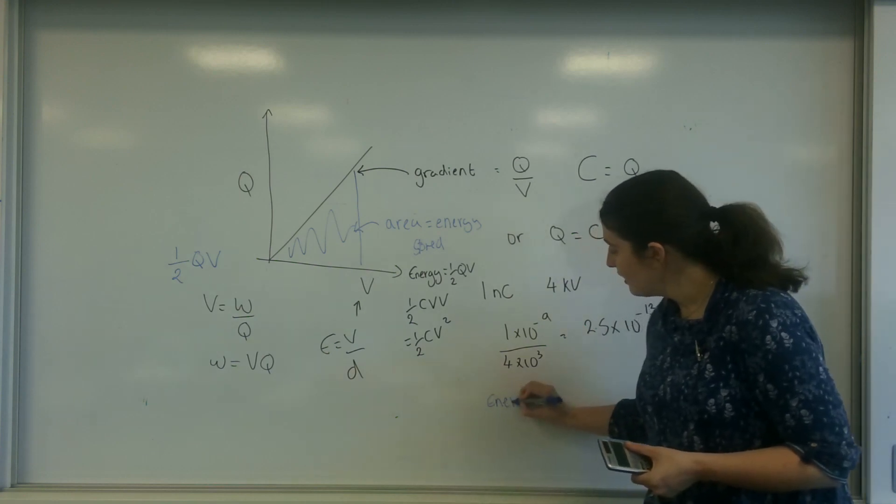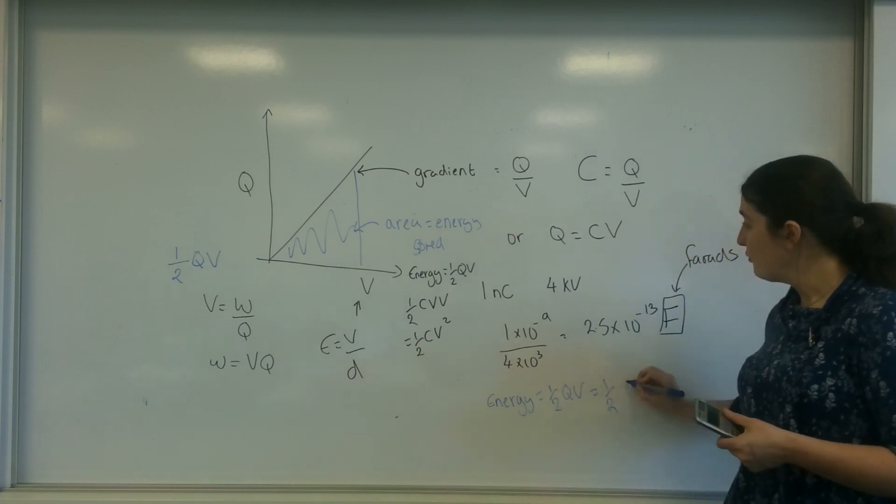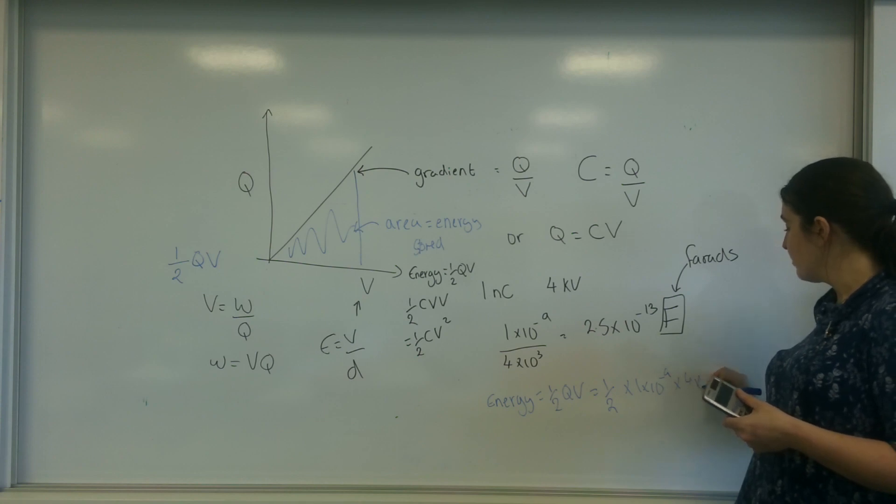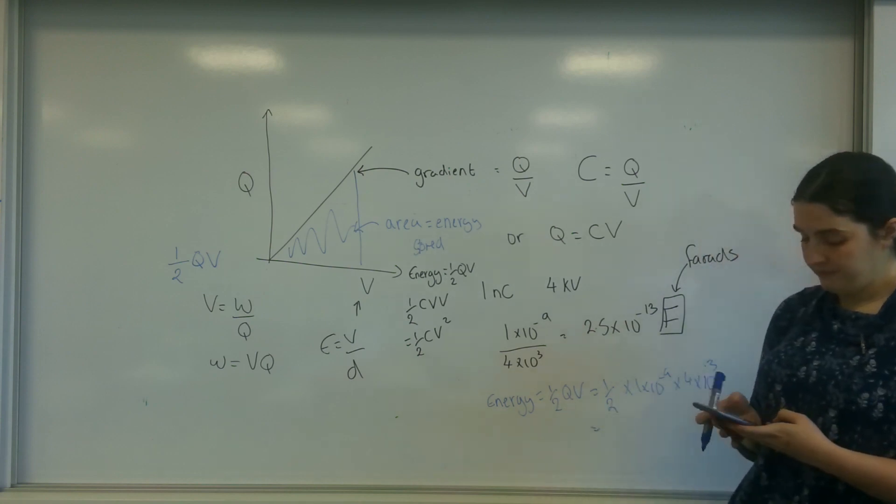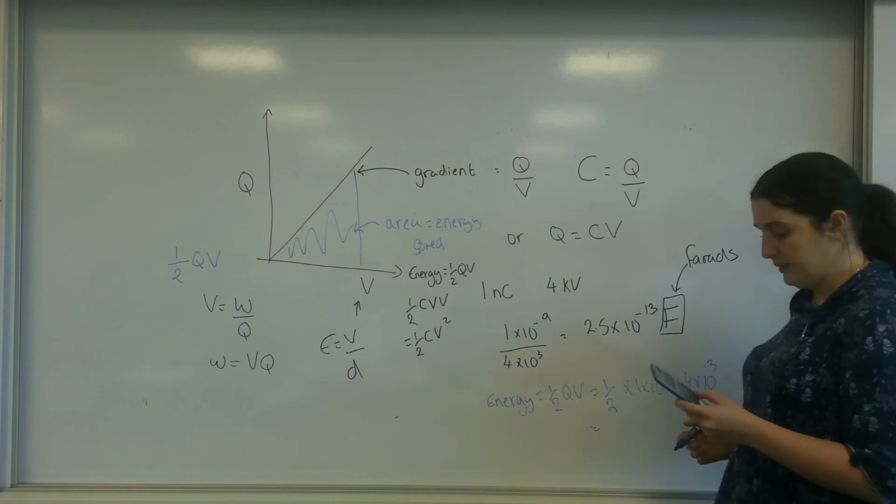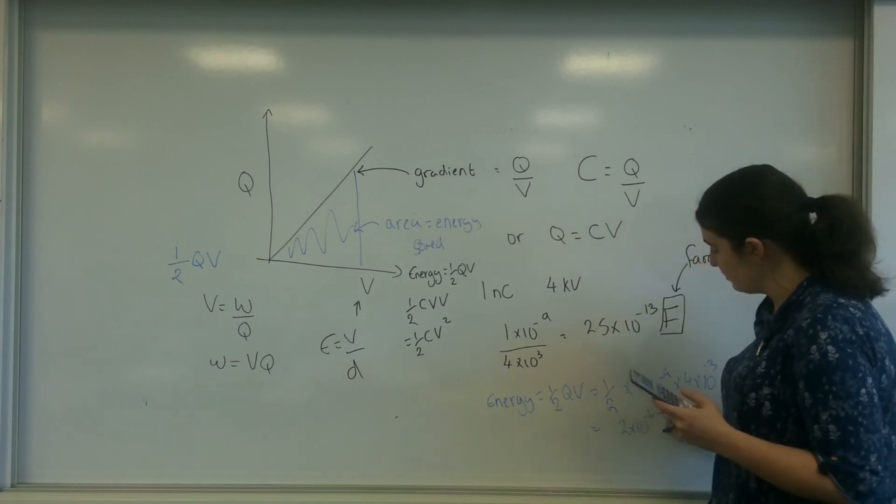So the energy is a half QV. So a half times 1 times 10 to the minus 9 times 4 times 10 to the 3. And that is going to be 2 times 10 to the minus 6 joules.